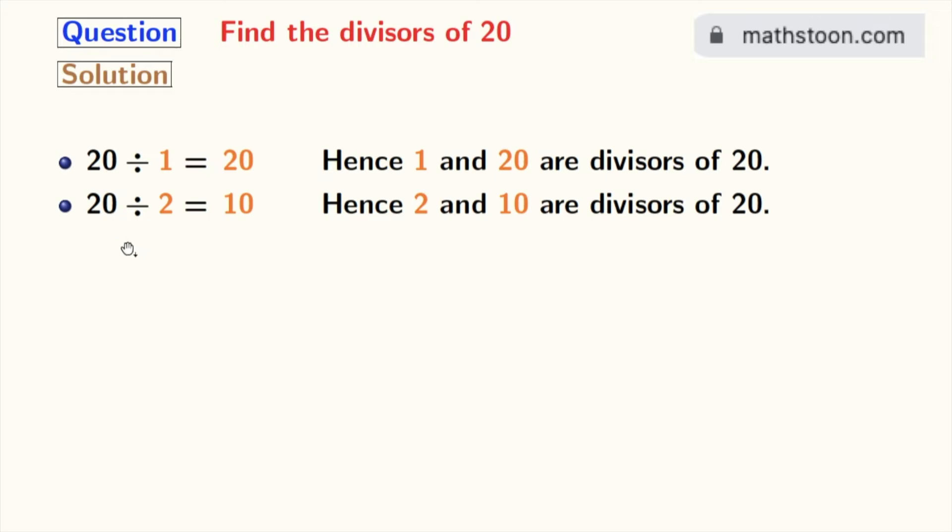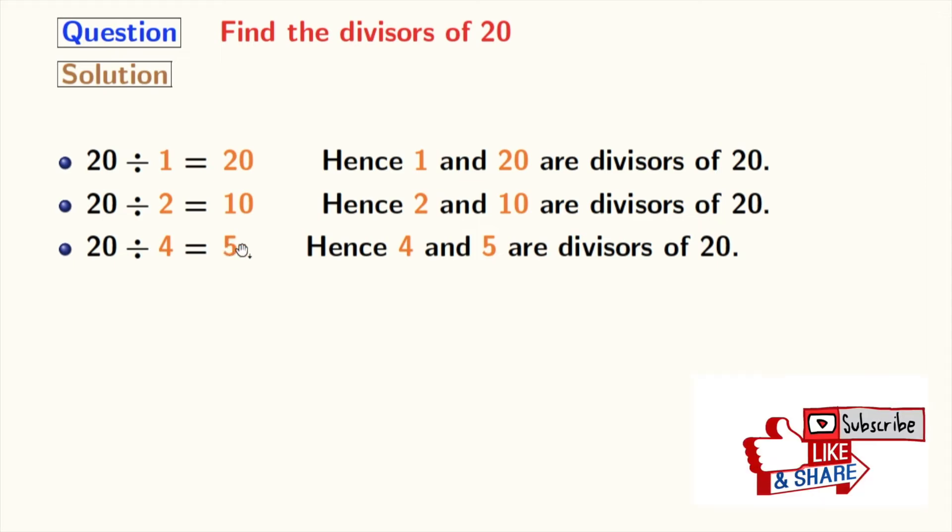So, we will move to 4 and see that 20 divided by 4 equals 5. So, we have 4 and 5 as the divisors of 20. Now notice that the next number, 5, is already here. So, we will stop right now.